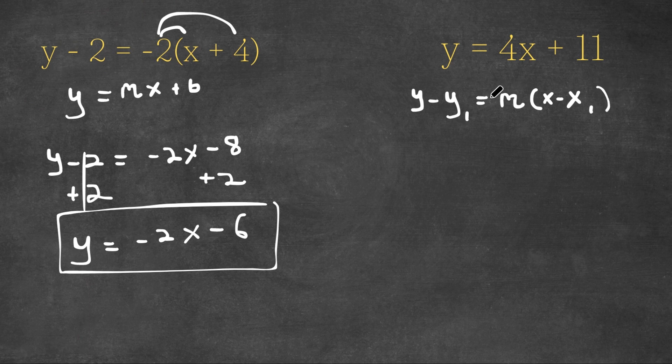And the thing is, this can have an infinite amount of equations, because we can do anything for x sub 1 and y sub 1 as long as they equal y equals 4x plus 11. But however, our slope m is always going to be 4.